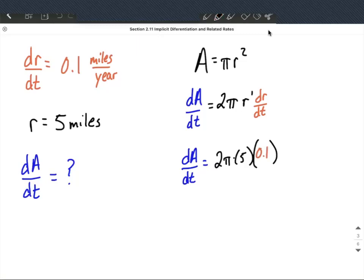Doing a little bit of simplifying down here. That's the same thing as 10 pi times 1 tenth. So 10 times 1 tenth is just going to give us pi as our rate, which feels like a weird rate, but that's okay.